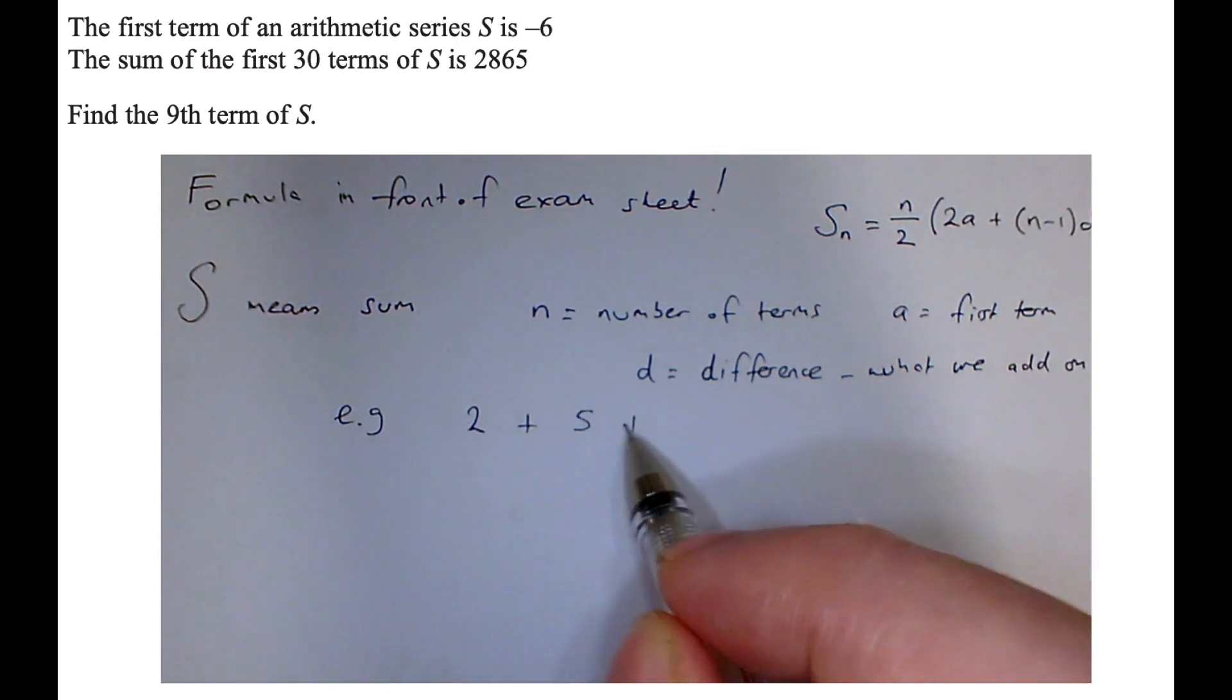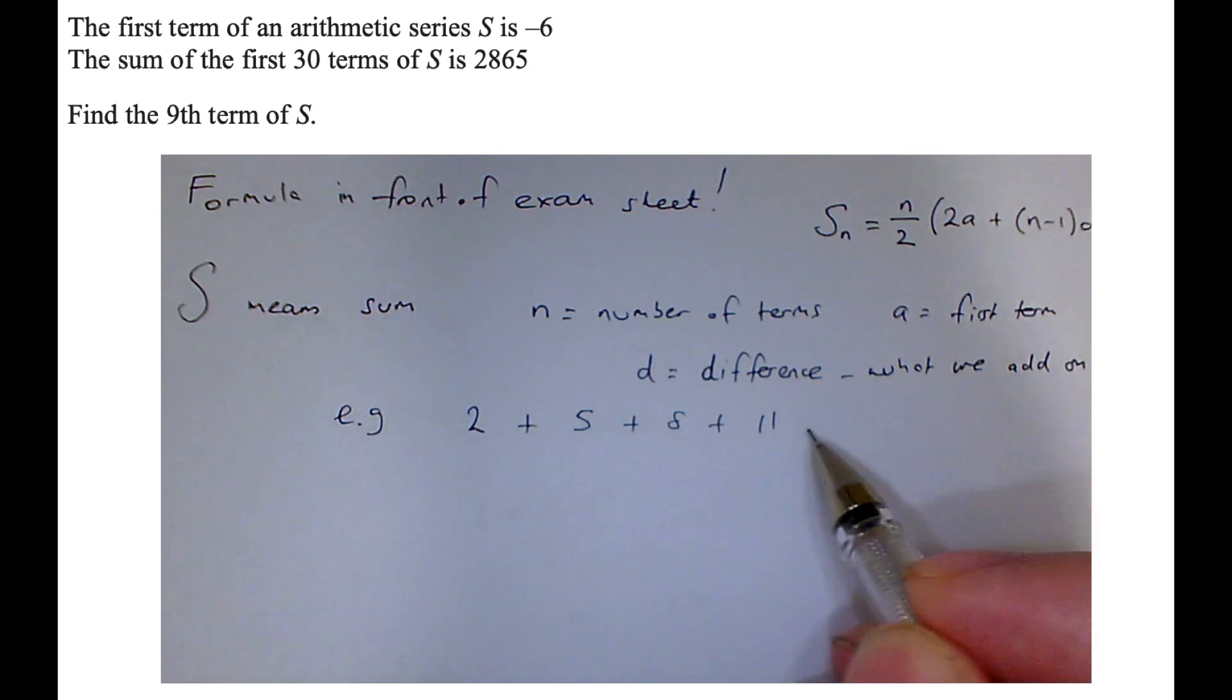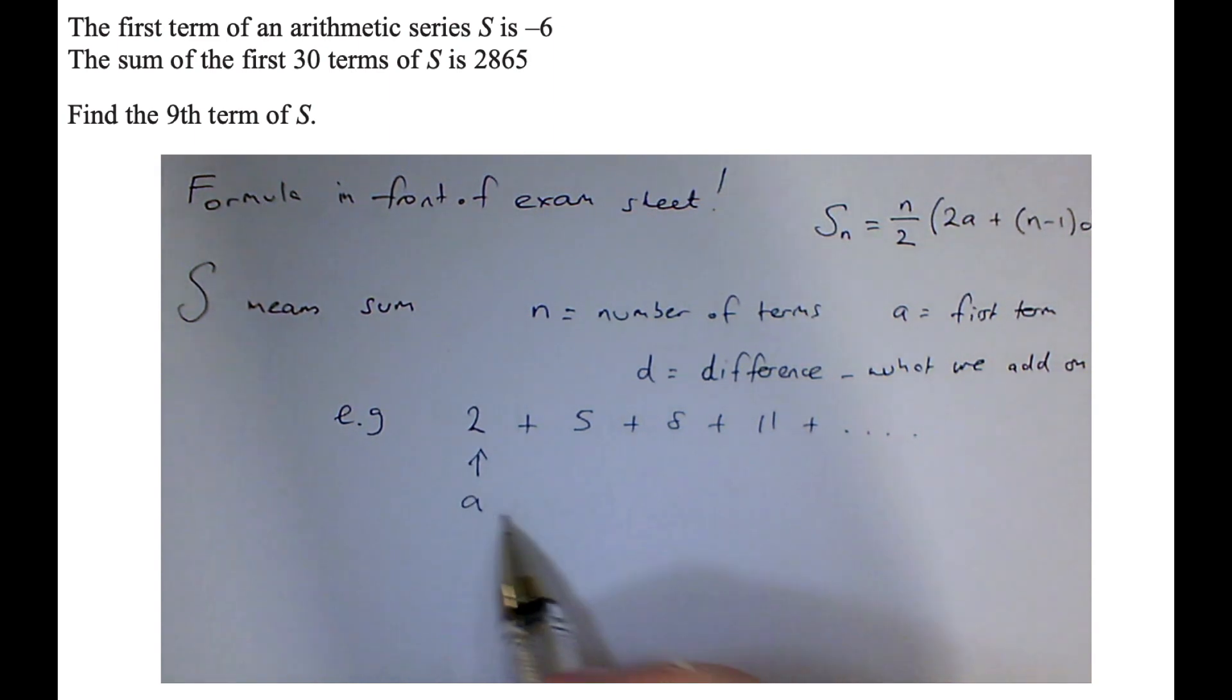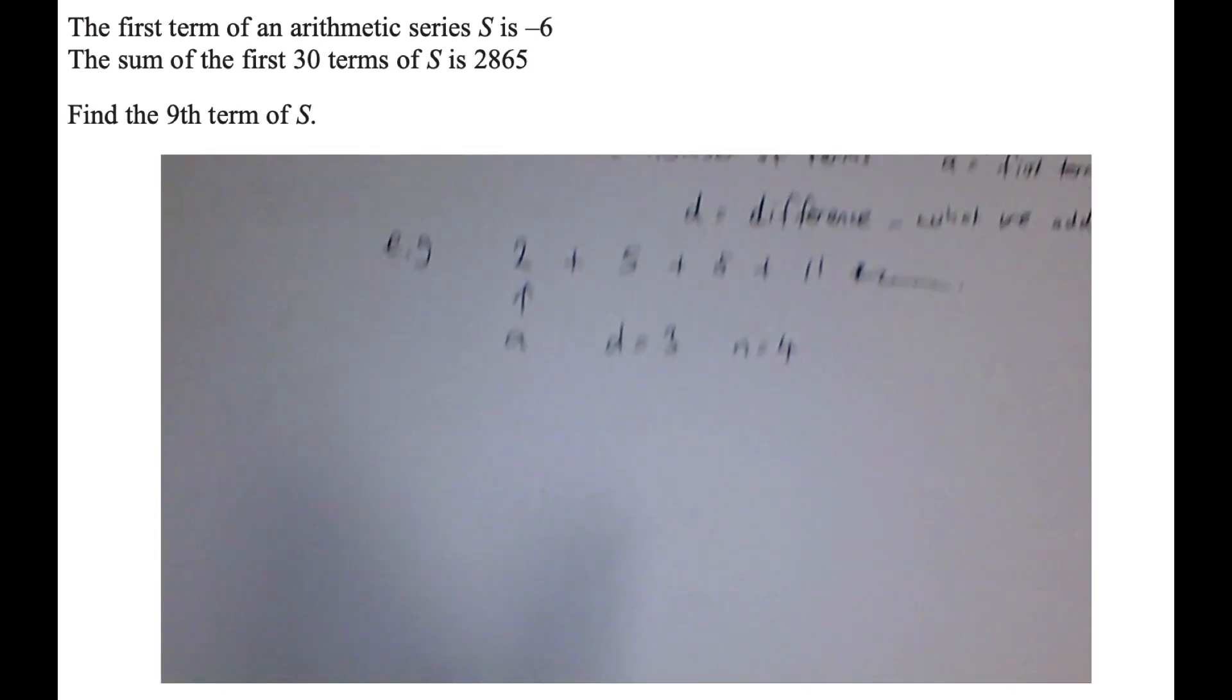So for example, if I had, let's say I'm going to add up the first four terms: 2 plus 5 plus 8 plus 11. Then A, that's the first term. The difference is obviously 3, and I'm going to be summing up the first four terms, so N equals 4. And then I would use the formula and substitute in those values.